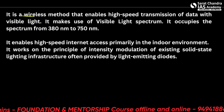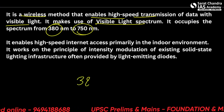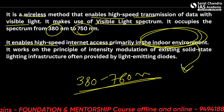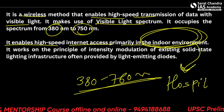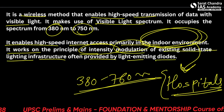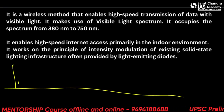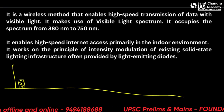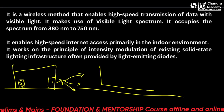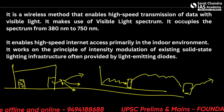VLC is a wireless method enabling high-speed data transmission with visible light, using the visible light spectrum from approximately 380 nm to 760 nm. It enables high-speed internet access primarily in indoor environments — including hospitals where Wi-Fi interference is a concern. It works on the principle of intensity modulation of existing solid-state lighting infrastructure, often provided by LEDs. Intensity modulation means the signal intensity is boosted back up through various transmitters when it begins to fall.